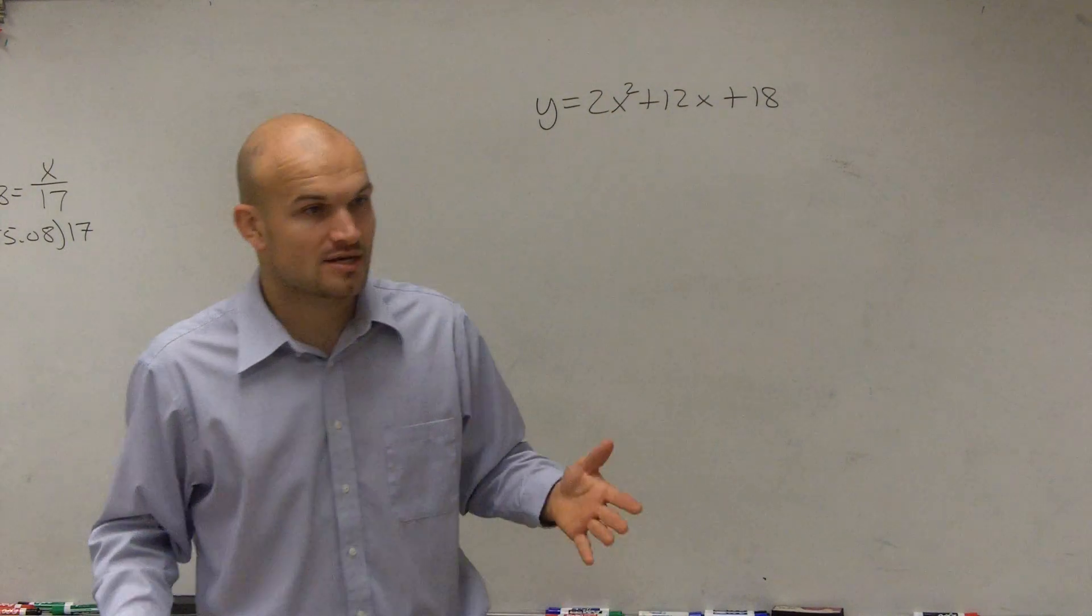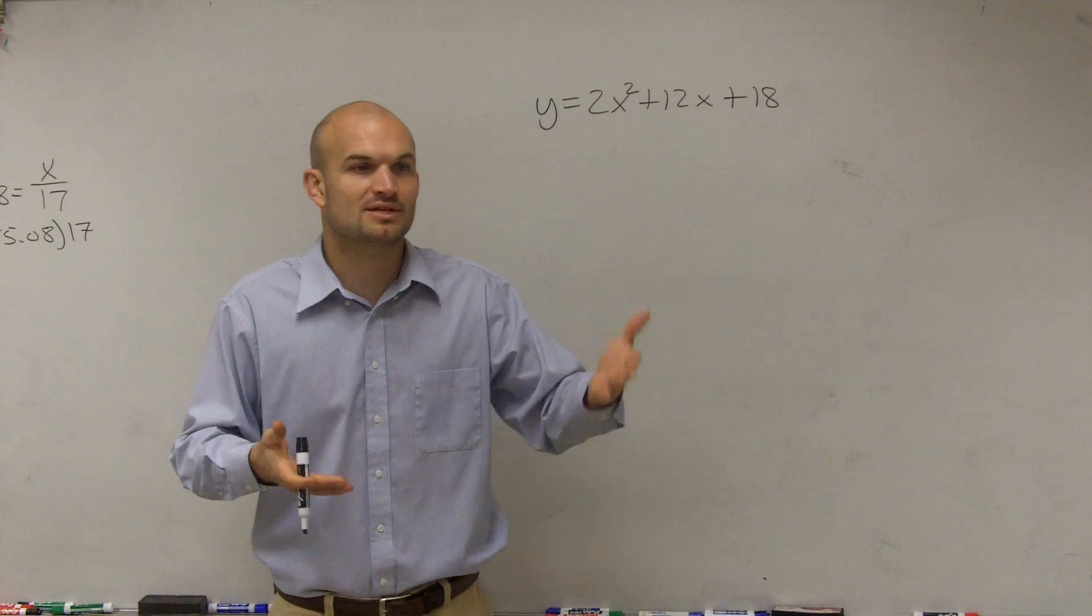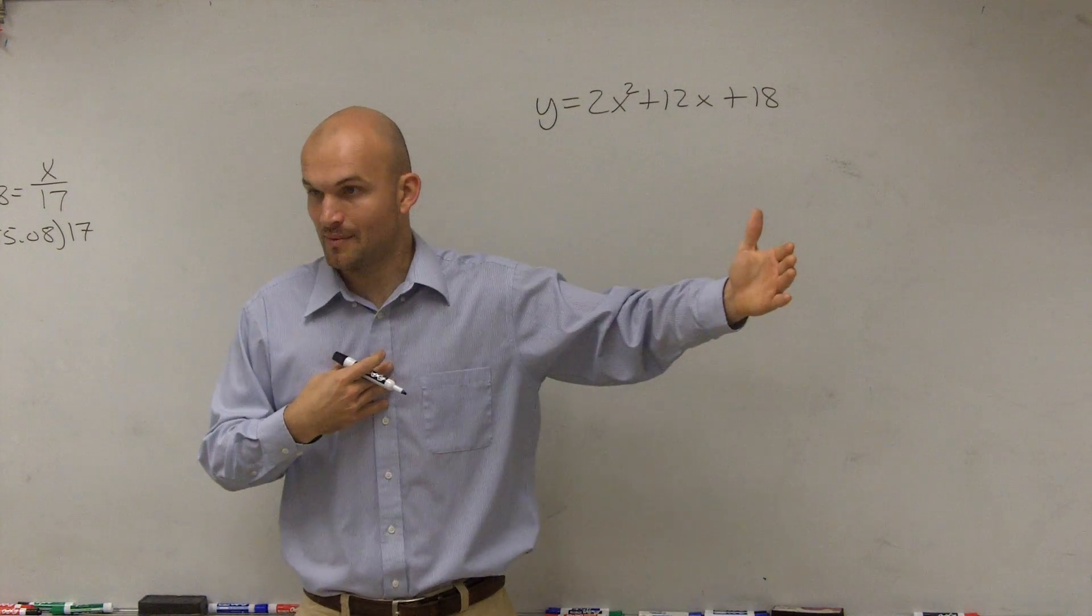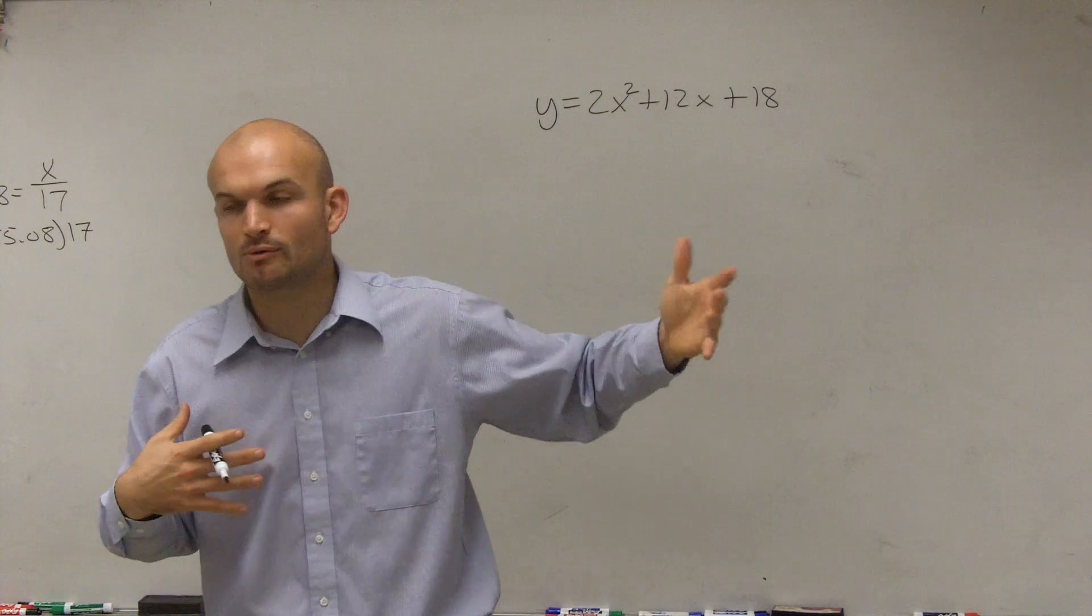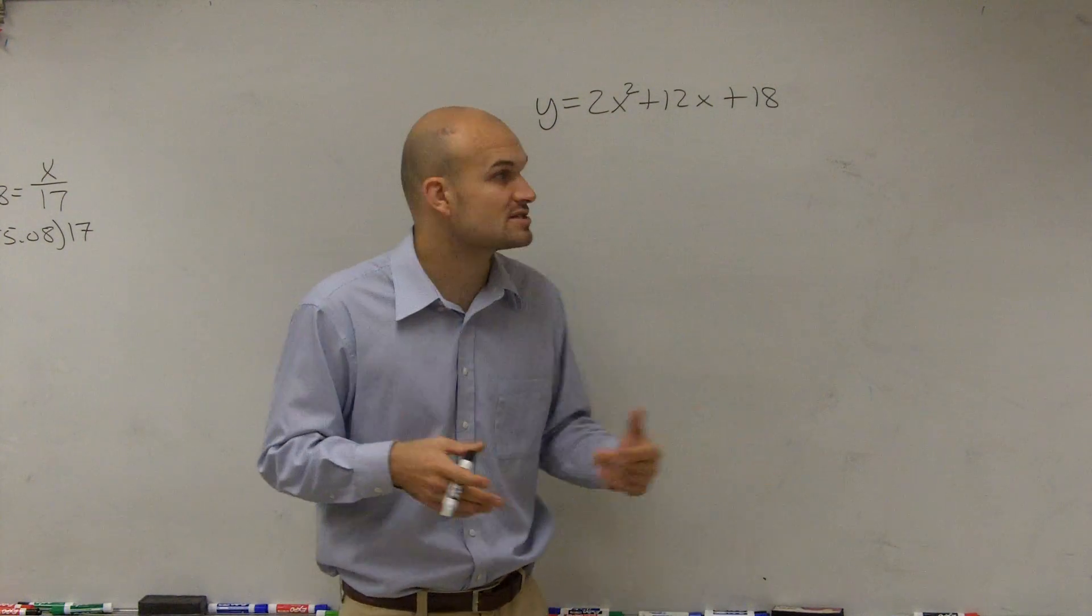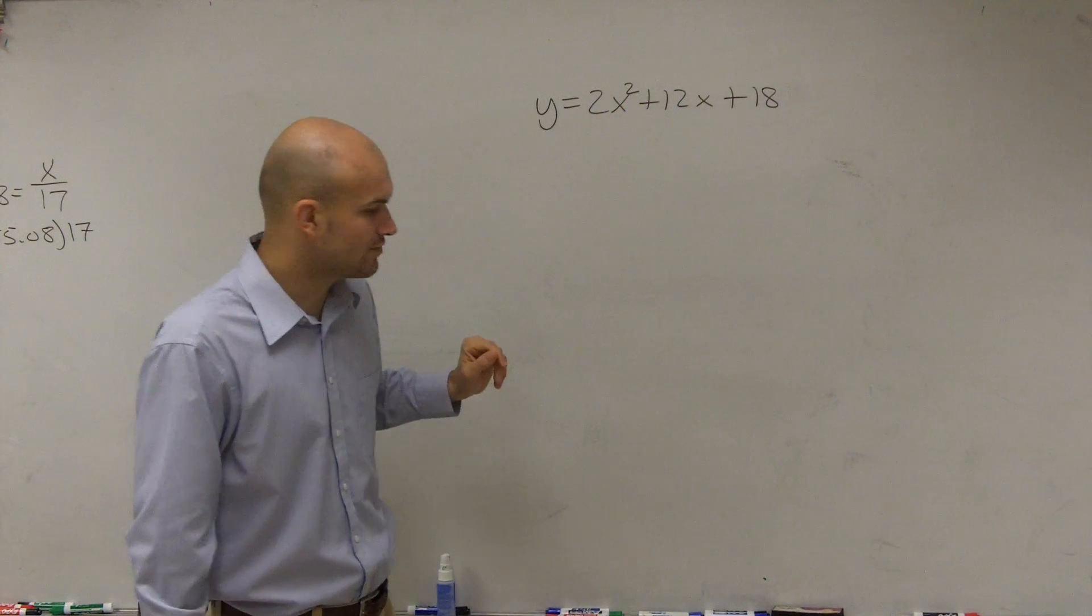So if we want to find the vertex, what we learned previously was to do opposite of b divided by 2a, then evaluate for f of opposite of b divided by 2a. However, what we're practicing right now is working on finding what the vertex is in vertex form. So we need to transfer this over to vertex form.